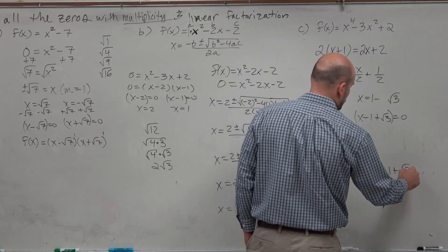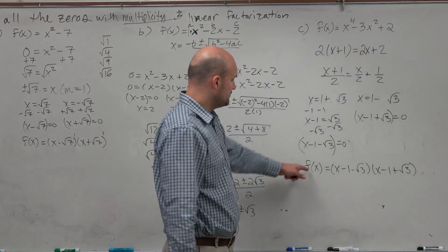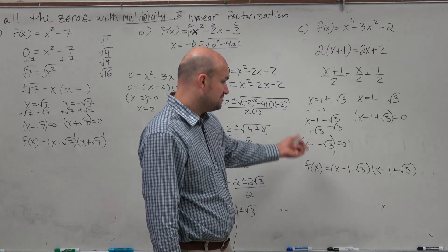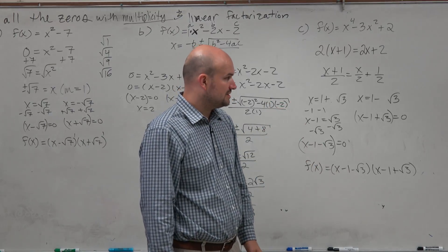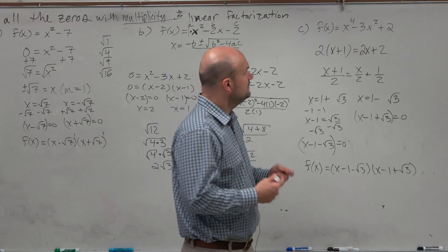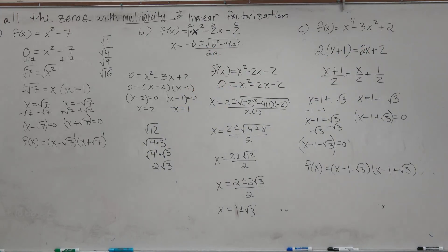But hopefully you guys can see that the process is not overly complicated, it's just dealing with a little bit of extra terms. So that would be your linear factorization. You can see both these zeros would have a multiplicity of 1. So that is basically what I wanted to cover with you guys. What we're doing is we are opening the door now to a new...